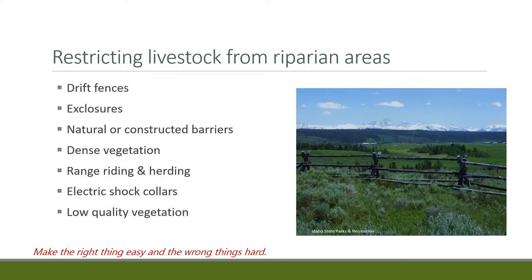Other ways to restrict animals from riparian areas include drift fences — sections of fence that don't create pastures but act as barriers to animal movement. You could create exclosures, especially ribbon exclosures just a few feet on either side of the riparian area. There are downsides: fences are not ideal from a wildlife standpoint, and productive ecosystems behind exclosures that aren't grazed can become decadent with increased weeds and thatch. You could also use natural or constructed barriers, like rocks or felled trees along the stream, to change animal movement.